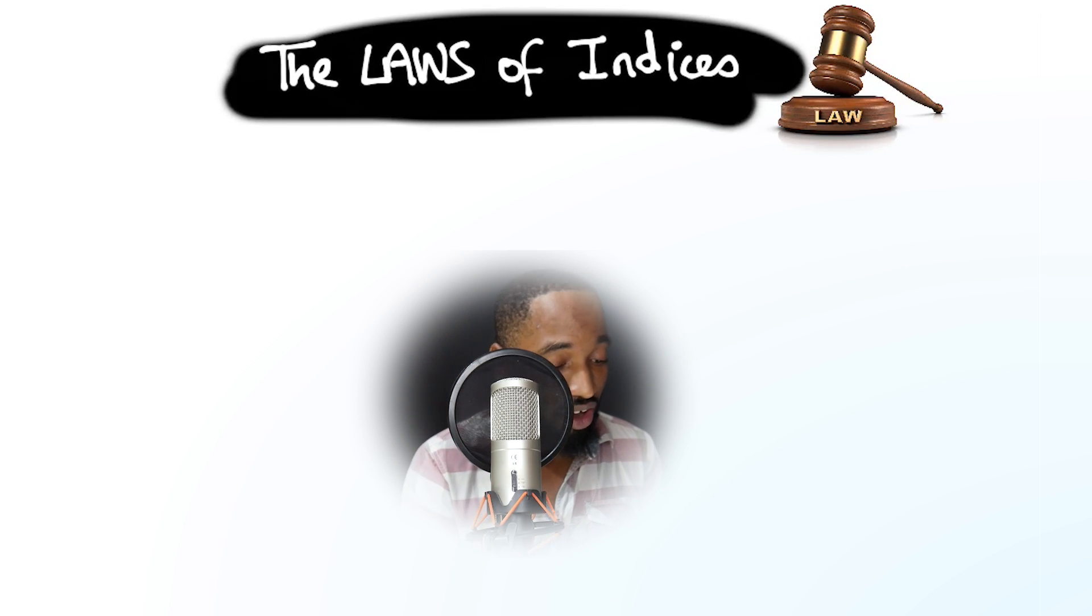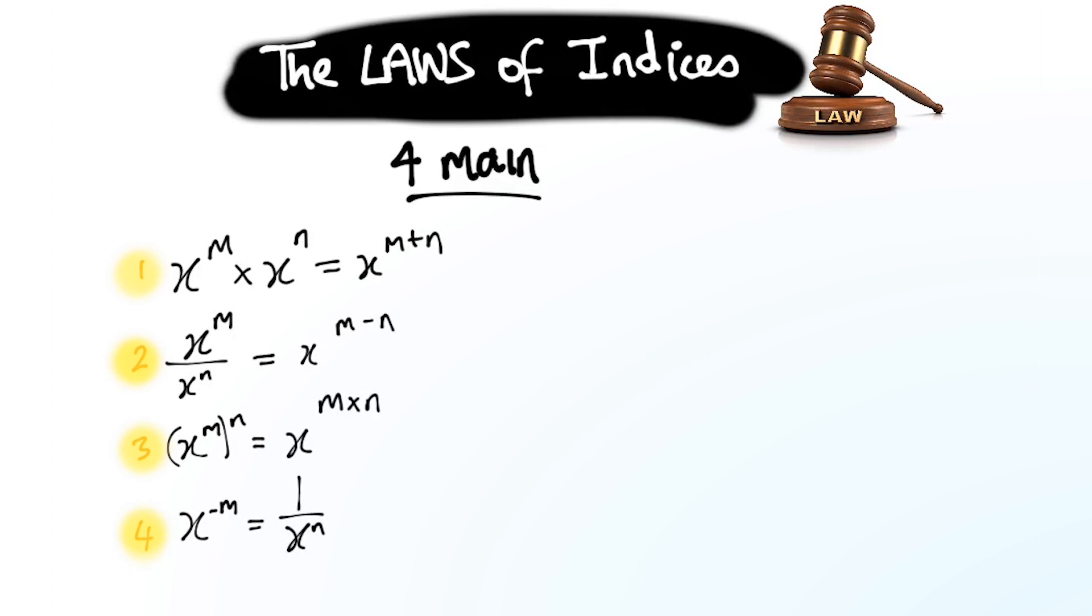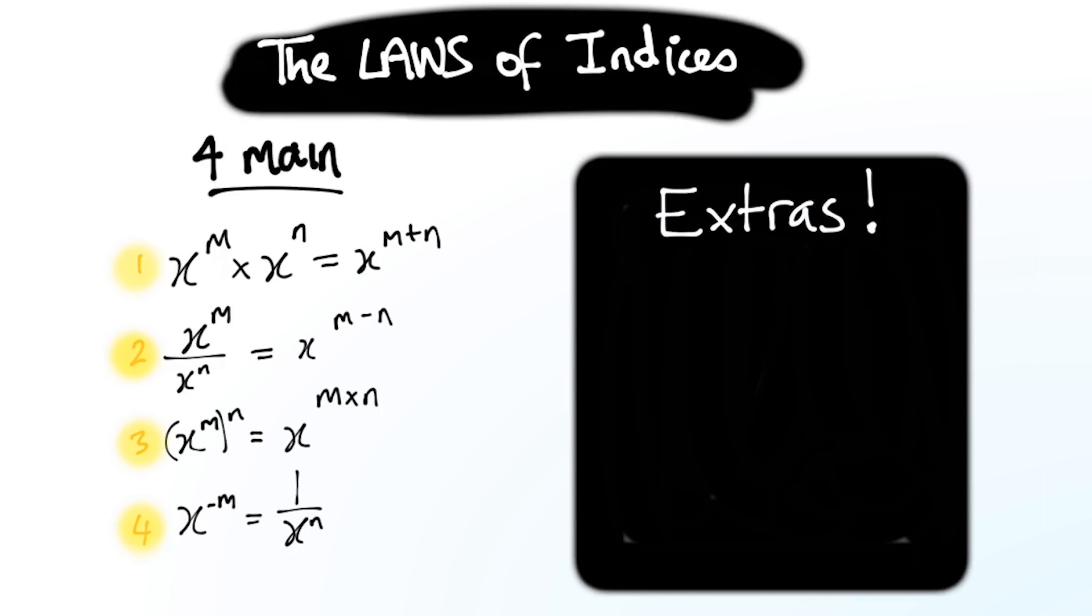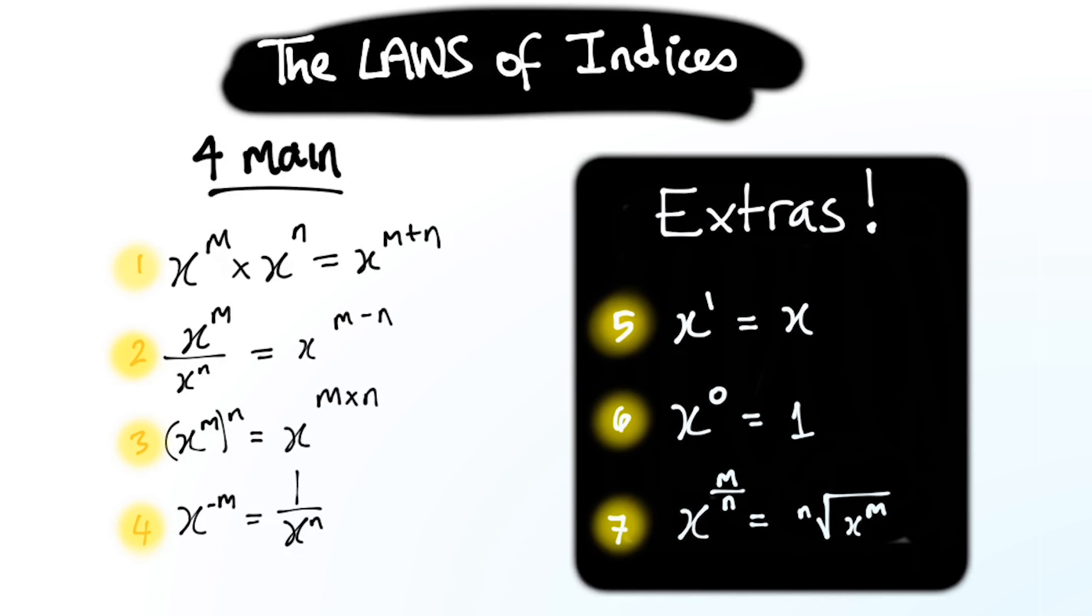Pay attention to this one because these are the laws of indices, the four main laws that come directly from your syllabus, so they should ring a bell. I'm going to go through every single one of them and show you the example very quickly. It's a nice quick video. You should also know before we go into that, there are some extra laws. Some textbooks have them as laws, but it's just little things you should know about indices. Any number to the power of 1 is itself, any number to the power of 0 is 1, and there's a little neat trick you need to know for fractional indices as well.